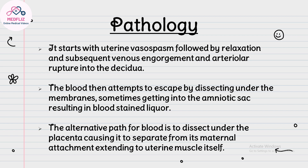The mechanism behind placental abruption starts with uterine vasospasm, followed by relaxation and subsequent venous engorgement and arterial rupture into the decidua. The blood then attempts to escape by dissecting under the membranes, sometimes getting into the amniotic sac, resulting in blood-stained liquor. Alternatively, blood may dissect under the placenta, causing it to separate from its maternal attachment and extending into the uterine muscle itself.